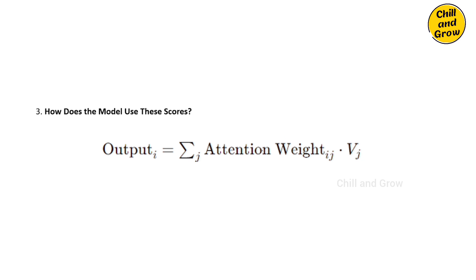The output is for the first word. For each word, we calculate the attention weight. Each word has an attention weight, and that word also has a value — the value is the actual meaning of the word. We multiply each word's attention weight by its own value. For example, if we look at the first word — there is a dog — we multiply the attention weight by the value of dog. The total sum is the whole value: the sum of attention weight multiplied by value vector.